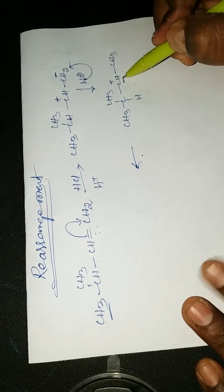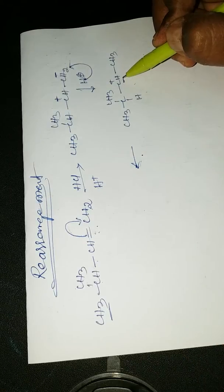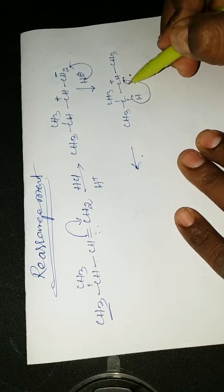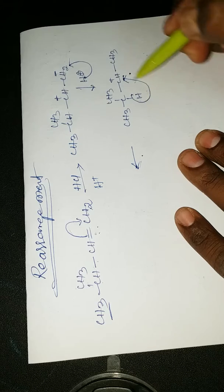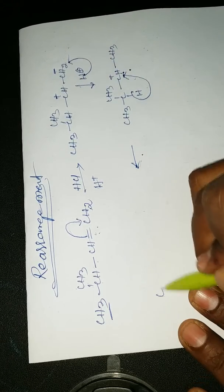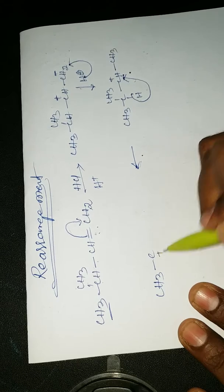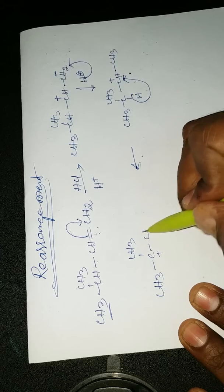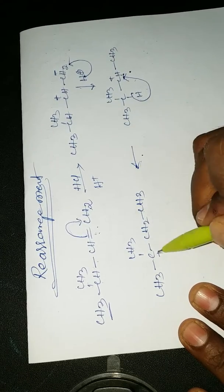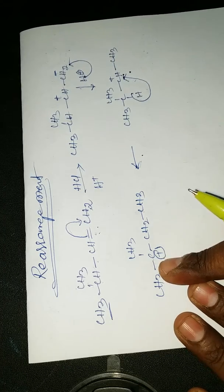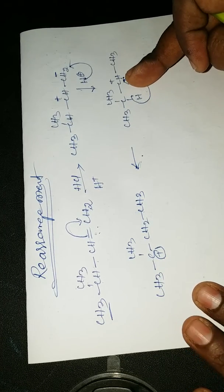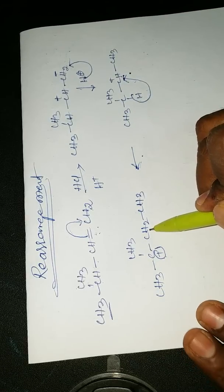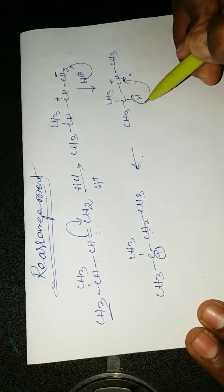There is no stable carbocation here because this is a secondary carbon, and secondary carbocations are unstable. That's why the hydride shifts towards this carbocation side. After the hydride shift, we get CH₃-C⁺(CH₃)-CH₂-CH₃. The tertiary carbocation is more stable compared to the secondary carbocation.